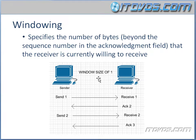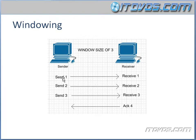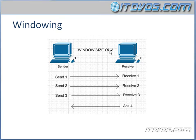Let's take a look at another example where the window size is three. In this case, the sender has the ability to send segments one, two, and three before it gets an acknowledgment back. So it sends one, two, and three. The receiver receives them all and then sends back ACK number four, because that's what it wants next. But the sender has to wait until it gets that acknowledgment before it can send the fourth segment, because the window size is set to three.